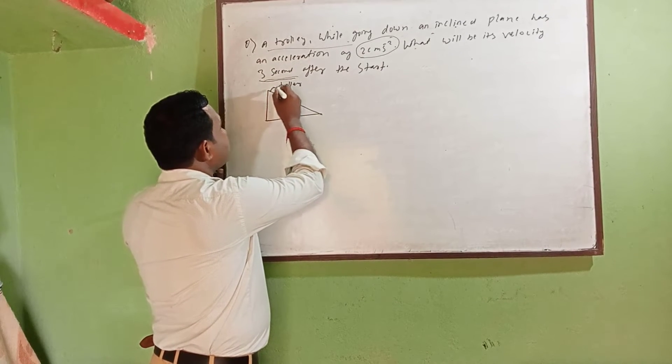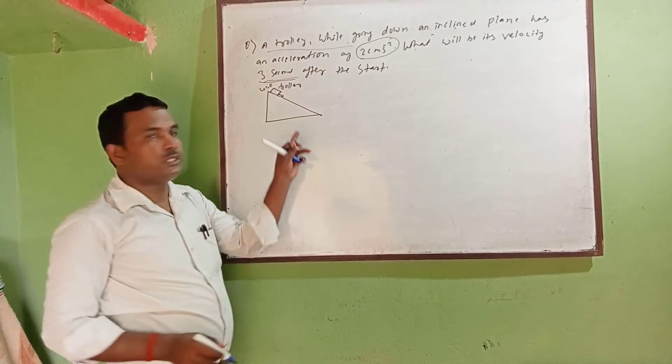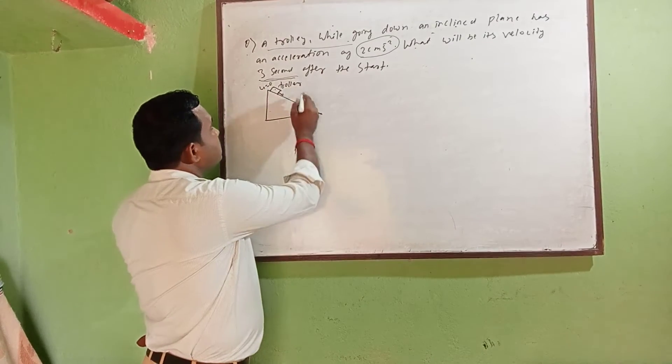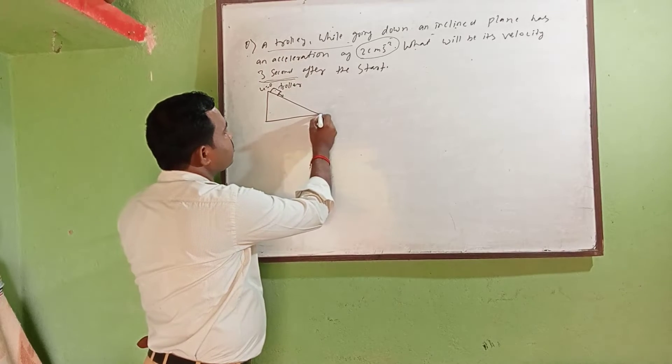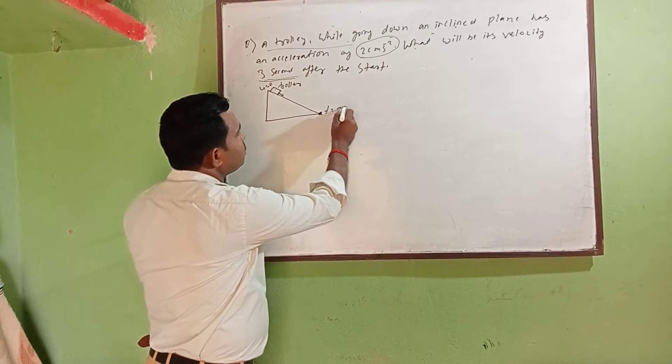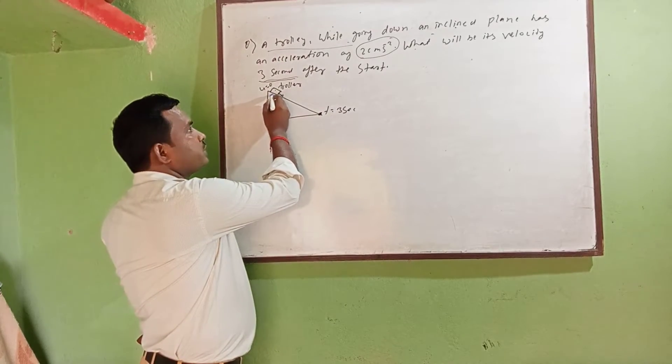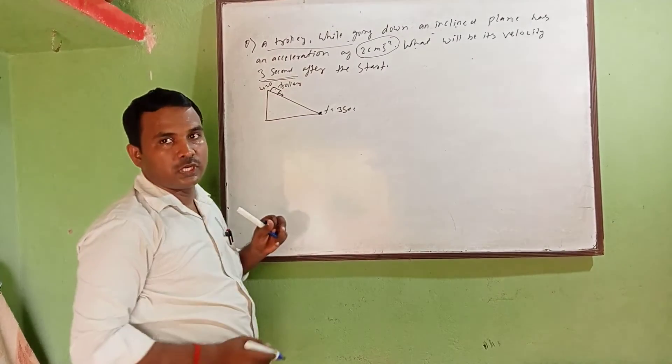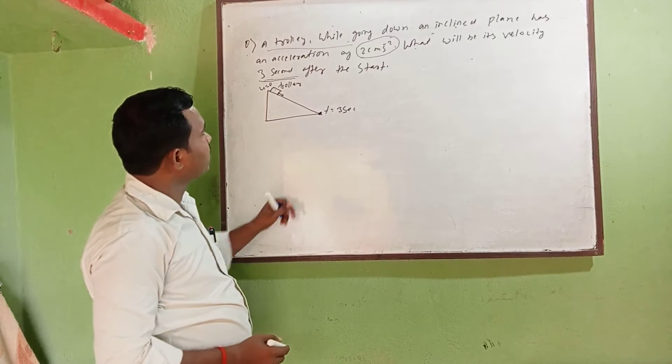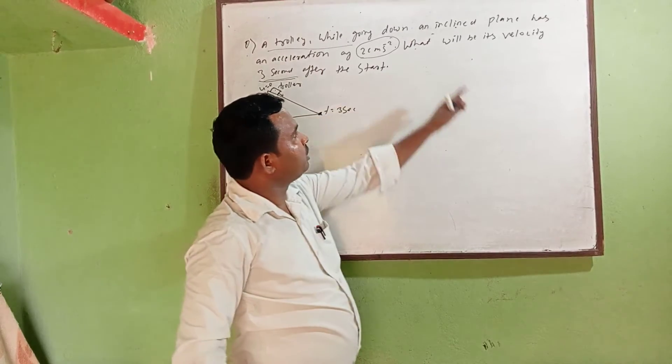The trolley at this time, u equals - it is at rest so u will be zero. After three seconds, when t is equal to three seconds, if there is the acceleration two centimeter per second square, then what will be the velocity? Our question is what will be its velocity.